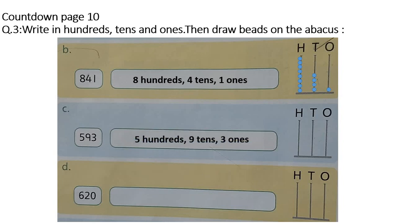Part C is 593. You will write 500, 9 tens, 3 ones. How many beads in hundreds? 5 beads. How many beads in tens? 9 beads. And how many beads in ones? 3 beads.